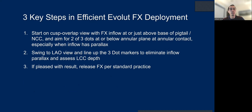In summary, the three key steps in efficient Evolut FX deployment: Step one — start with the cusp-overlap view, FX inflow just above the base of the pigtail of the non-cusp, and aim for three dots below or at the annular plane at annular contact, especially when the inflow has parallax. Step two — swing to the LAO and line up the three dot markers to eliminate inflow parallax and assess LCC depth. Step three — if satisfied, release per standard practice; if not, push forward to gain depth on the non-cusp to avoid risk of pop-out.